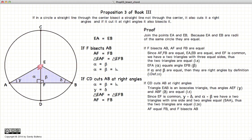So, again, if alpha and beta are right angles, then AF is equal to FB. And there we have demonstrated the veracity of this proposition.